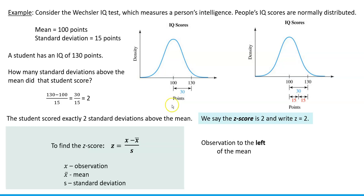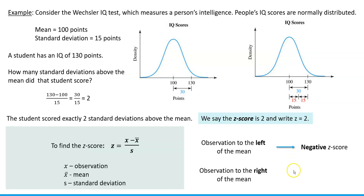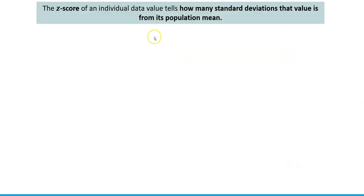To summarize: an observation to the left of the mean is going to have a negative z-score. The z-score of an individual data value tells how many standard deviations that value is from its population mean.